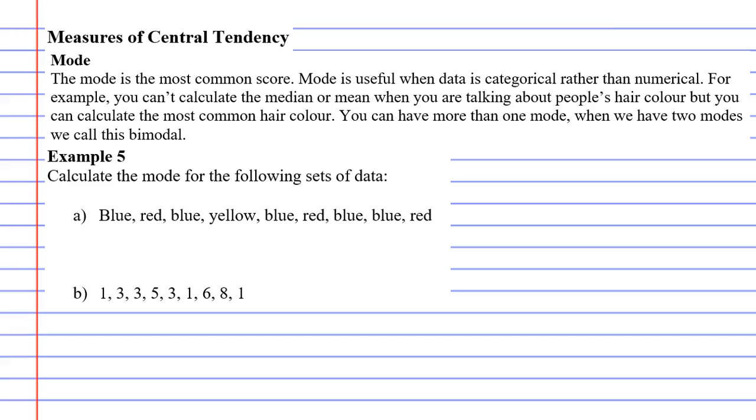Mode does have its uses though, and mode is useful when you have what is called categorical data. Categorical data is seen in Example 5 question A where you've got some colors. They're categories, they're not numbers.